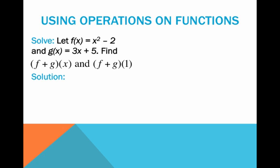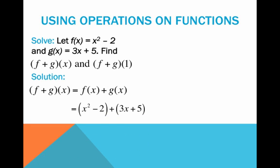Let's let f(x) = x² − 2 and g(x) = 3x + 5. Let's find (f+g)(x). So note: f plus g of x is the same thing as f(x) + g(x). We just want to add f and g, so let's substitute what f and g are. Since there's a plus sign in between those parentheses, I can just remove the parentheses and combine like terms. This is a new function created from combining f and g under addition.